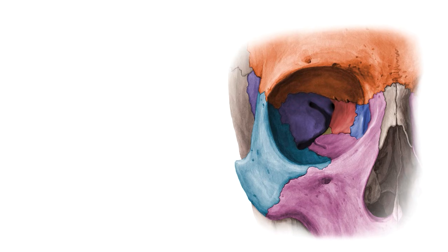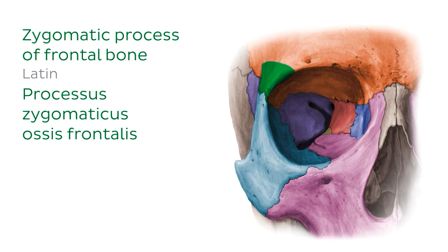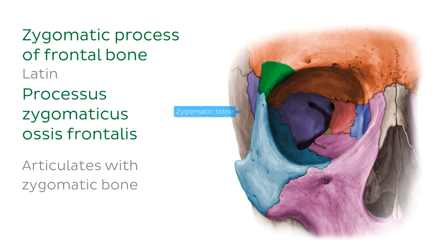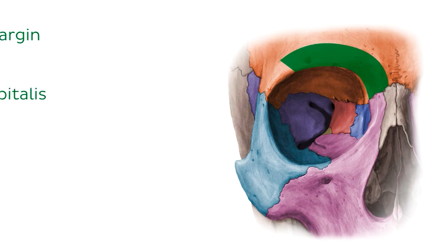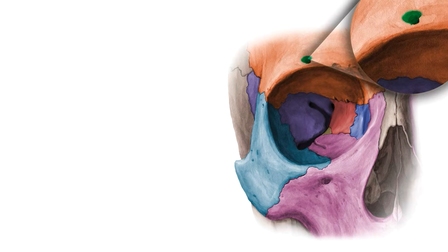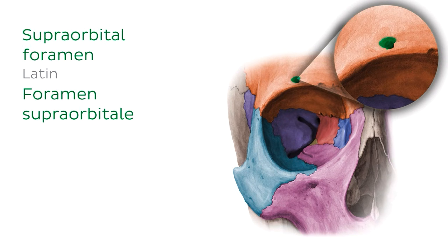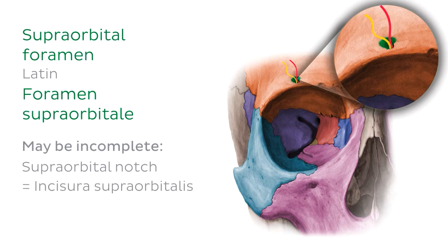A few more features of the frontal bone: the first is the zygomatic process, which is the inferolateral extension of the frontal bone that articulates with the zygomatic bone. Moving medially, we have the supraorbital margin, which marks the superior boundary of the orbit. The supraorbital margin is pierced by a small hole called the supraorbital foramen, which transmits the supraorbital vessels and nerve as they pass superiorly onto the forehead. Note that the supraorbital foramen is sometimes incomplete, appearing as more of a notch in the supraorbital margin as opposed to a defined hole.